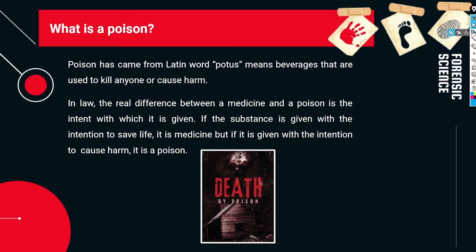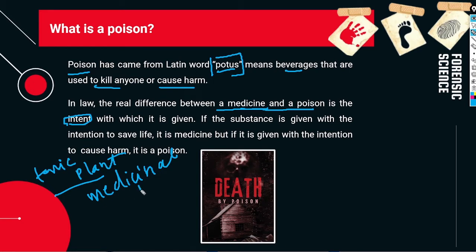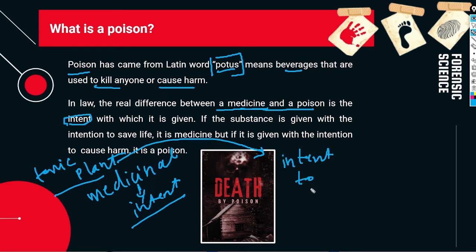The word 'poison' is derived from the Latin word 'potis,' which means beverages used to kill anyone or cause harm. In law, the real difference between a medicine and a poison is the intent. If a plant is given for medicinal treatment, the intent is for healing. But if the same plant is given with the intent to kill, it acts as a poison. So the main difference between medicine and poison is the intent with which it is given.